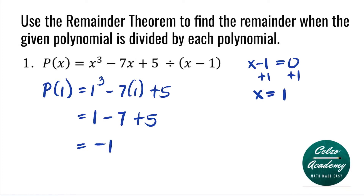So the value of P of 1 is negative 1. This means negative 1 is the remainder when P of X is divided by X minus 1.